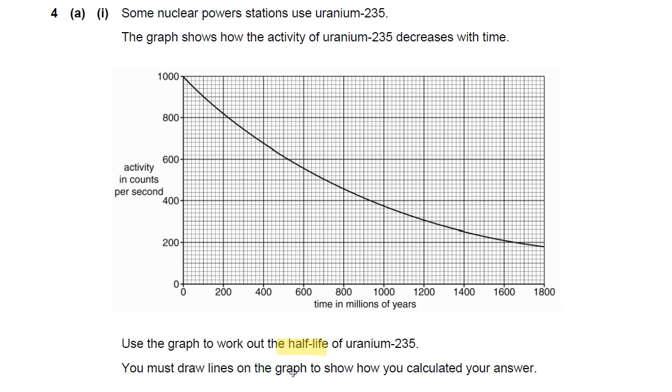A half-life is defined as the average time taken for activity to decrease by half. You must draw lines on the graph to show how you've calculated your answer. And I stress that word, average time taken for activity to half. So, to make an average, you need to have at least two readings from the graph. This is a two-mark answer. Don't forget to draw lines on the graph as it tells you.